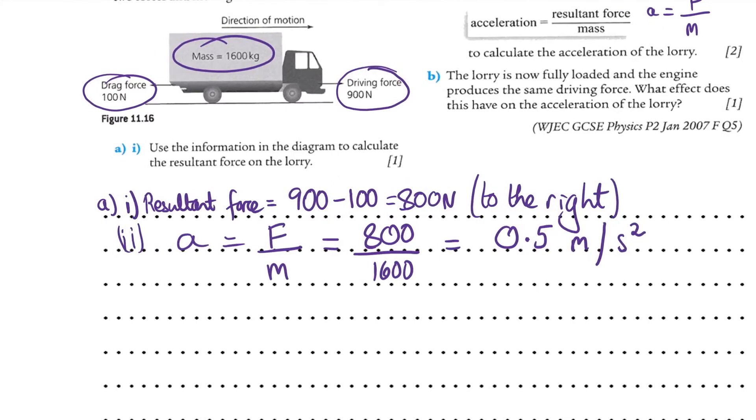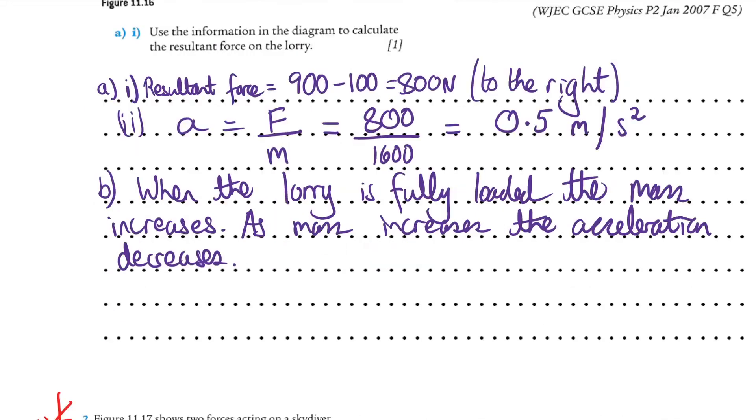Part B. The lorry is now fully loaded and the engine produces the same driving force. What effect does this have on the acceleration? Fully loaded, that means the mass increases. So I'd write something down. I'll write it down and I'll pause the video so we're not wasting time. Okay, just written down the answer. When the lorry is fully loaded, the mass increases. As mass increases, the acceleration decreases. Now there's the answer: as the mass increases, the acceleration decreases.